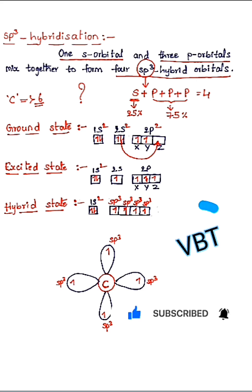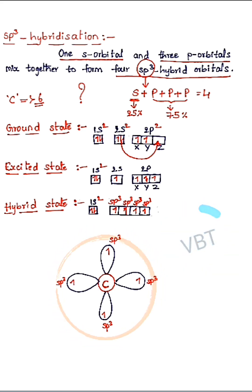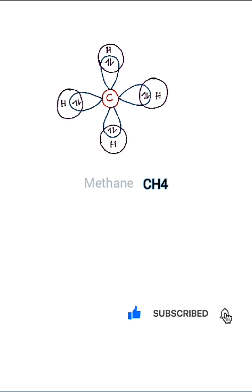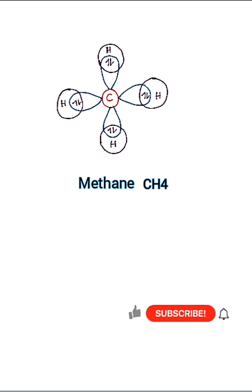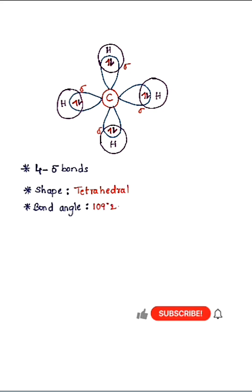According to valence bond theory, unpaired electrons form covalent bonds. The four unpaired electrons participate in covalent bonding, so four hydrogen atoms each share their single electron with the hybrid orbitals of carbon to form methane. Hybrid orbitals always form sigma bonds — the four sp3 orbitals of carbon and four hydrogen atoms form four sigma bonds. The shape of methane is tetrahedral with a bond angle of 109 degrees 28 minutes.